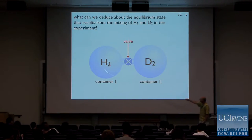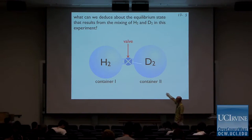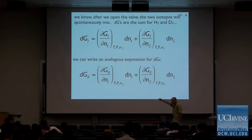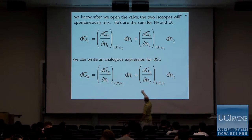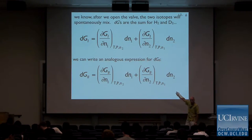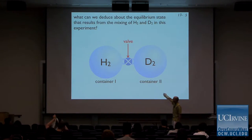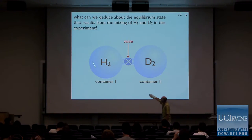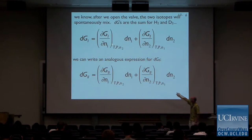We talked about this thought experiment: we have two isotopes of hydrogen in two different bulbs separated by a valve that's initially closed. Then we open it. We can describe the change in the free energy on the left side in terms of what's happening with component one and component two. In this case, component one is H₂ and component two is D₂. So we can write two equations for the left-hand side and two equations for the right-hand side.